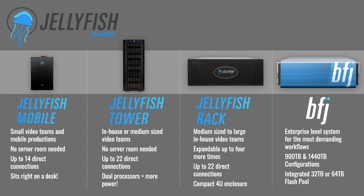A lot of people use the Mobile on remote locations — DITs love this box. You can add 4K and 6K workflows, and it has a handle on the top. Before the pandemic I was traveling with my Jellyfish Mobile in a Pelican case, flying with it all over the world. The Jellyfish Tower is the next step for in-house medium-sized teams — it has dual processors, more RAM, is ZFS-based, supports up to 22 direct connections, and has more drive parity.